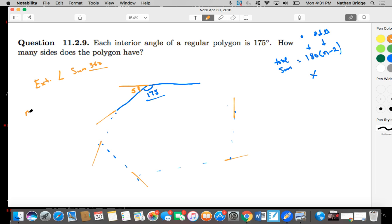So the number of sides, or the number of these angles, the number of these vertices, which is going to be the same as the number of sides—the number of vertices times 5 is equal to 360.